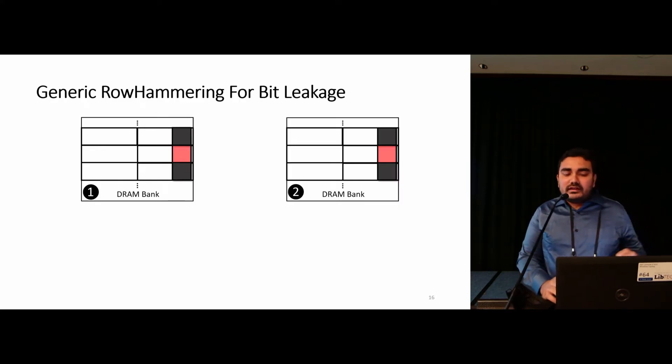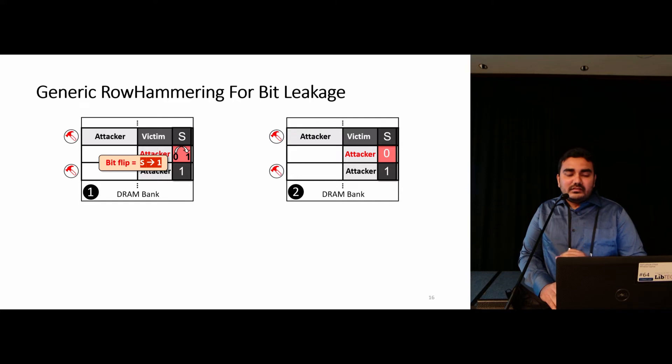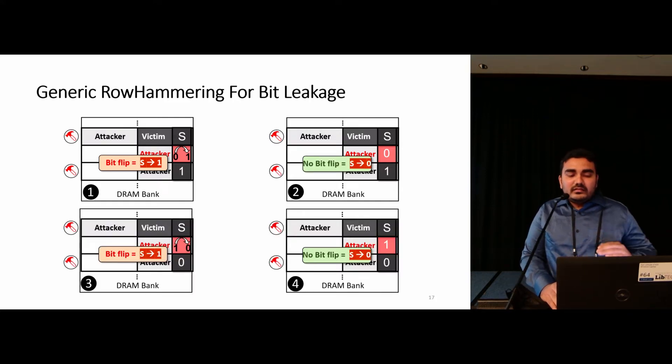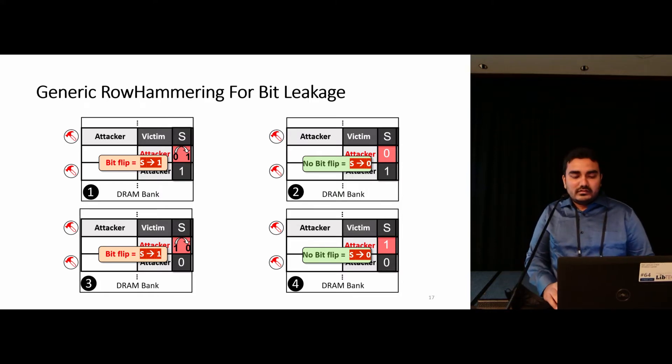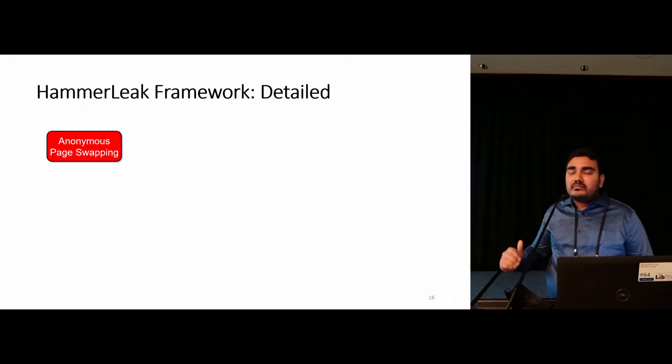So before moving forward, let me first address the first challenge and present you a generic rowhammer-based data stealing without relying on any specific victim application behavior. Here the victim as usual is placed in only one of the aggressor rows and then the attacker occupies the target row and other aggressor rows and presets them using alternating data pattern. After hammering, based on the existence of bit flip, victim secrets can be leaked. This technique can be applied by observing bit flips in either direction from 0 to 1 or 1 to 0. Now that we have our generic rowhammering technique to steal information from the DNN victim application, how can we systematically recover memory information from a large victim?